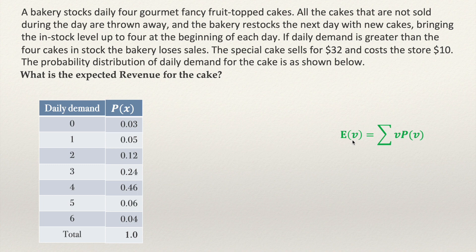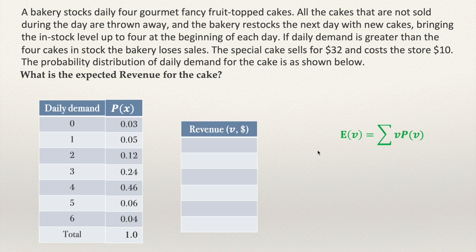In this case the variable is the revenue. We are going to compute the average revenue, or the expected revenue, for the cake. I'm going to use 'b' as the variable for the revenue. Remember that revenue is calculated by multiplying the price of the cakes by the number of cakes sold. So the revenue could be $0 when you don't sell anything.